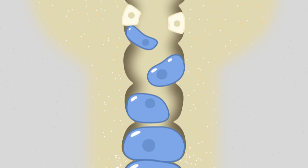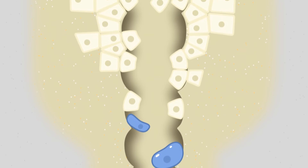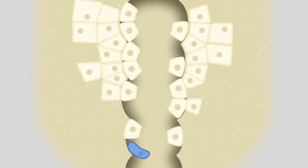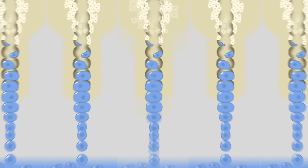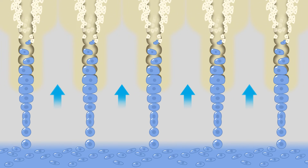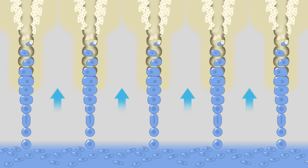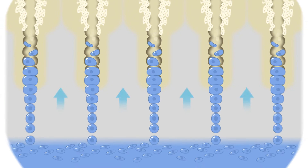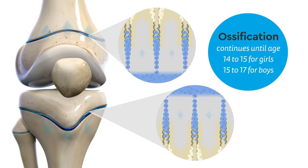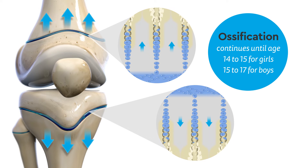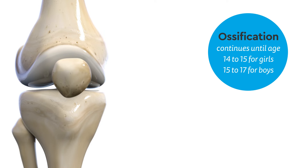The cells grow larger and create a hard structure around them, making small pockets for new bone cells to grow in their place. In this way, the bones of our arms and legs grow in length. This continues until about the age of 14 to 15 for girls, and 15 to 17 for boys, when the growth plate shuts down or fuses.